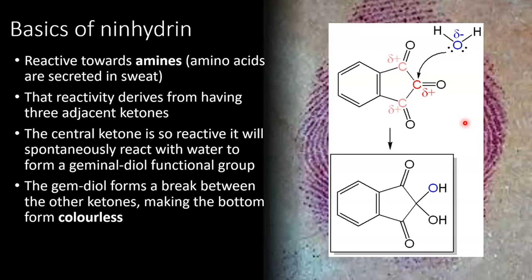This gives rise to a geminal diol, which is the functional group shown here. When a geminal diol forms, it breaks the conjugation between the ketone groups. In its fully conjugated form, all the ketones are linked together and ninhydrin is colored. But once the gem diol forms, the ketones are no longer linked together, so this form of ninhydrin is colorless.